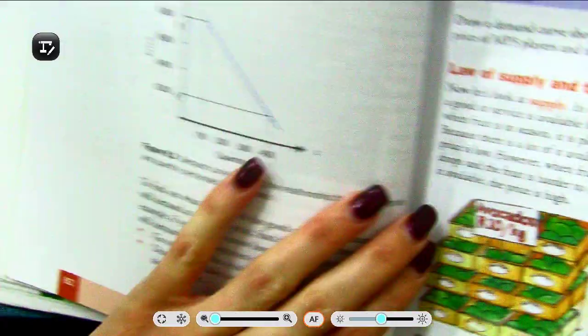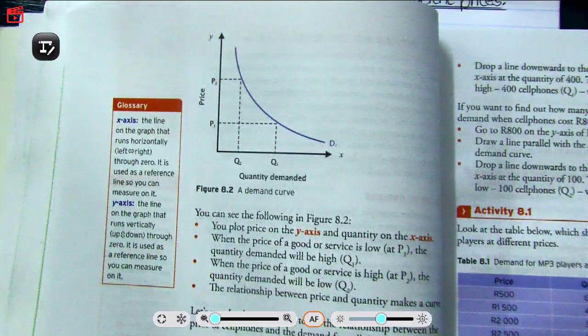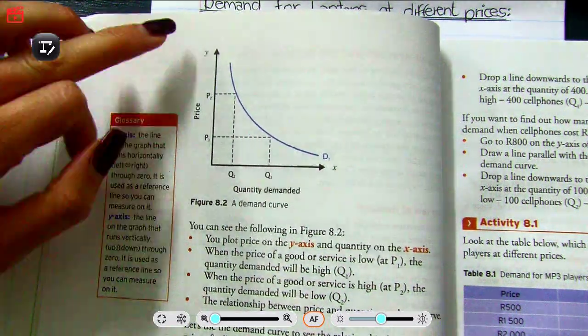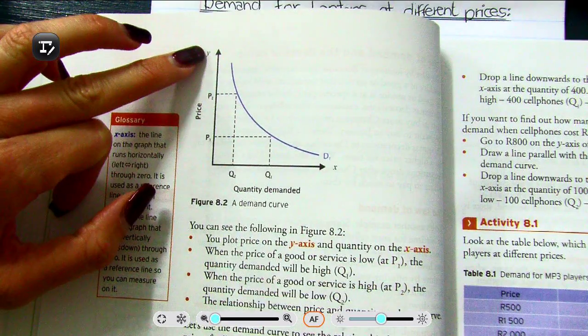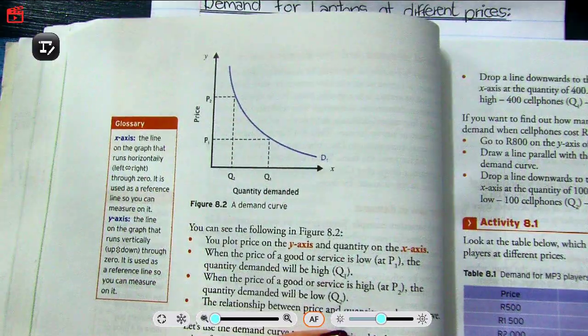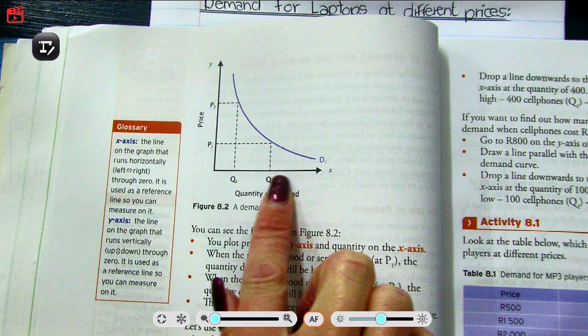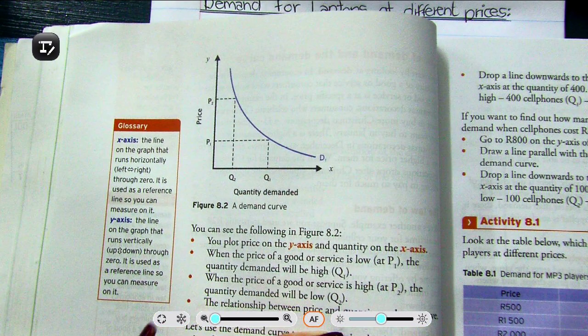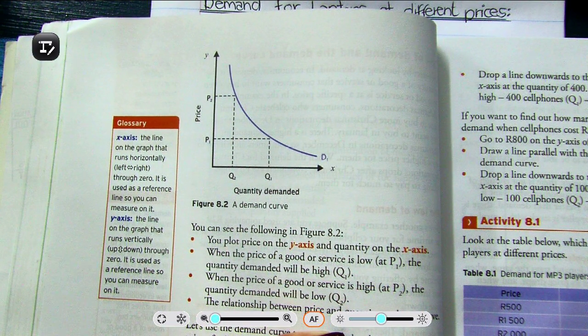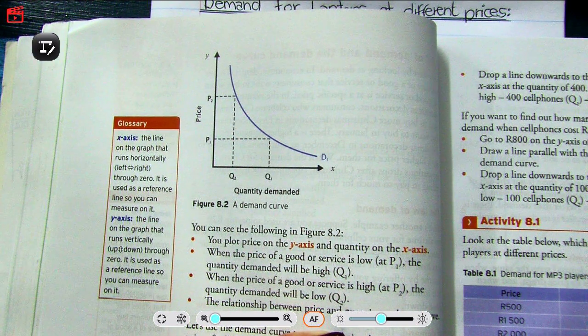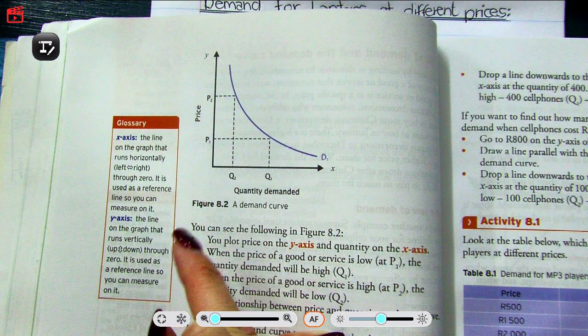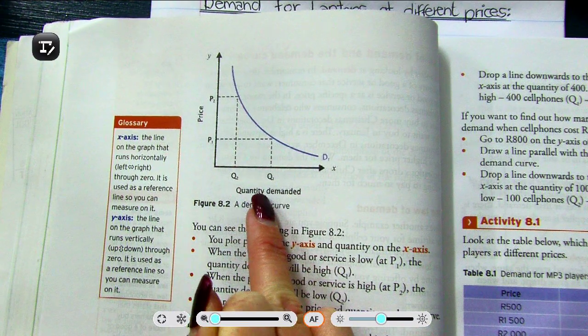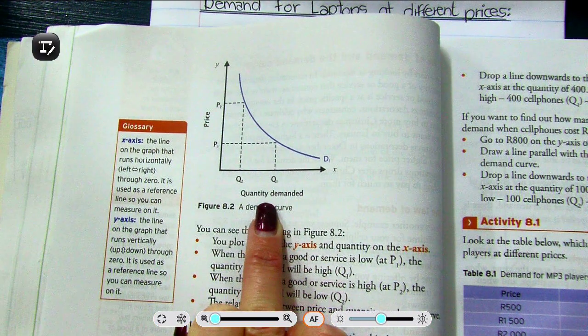If you turn to page 82, that's what a demand curve looks like. Please make sure you know which is the x-axis and which is the y-axis. The x-axis is at the bottom, and the y-axis goes up. Price is always on the y-axis, and quantity demanded is always on the x-axis. You always have to label them: price and quantity demanded.